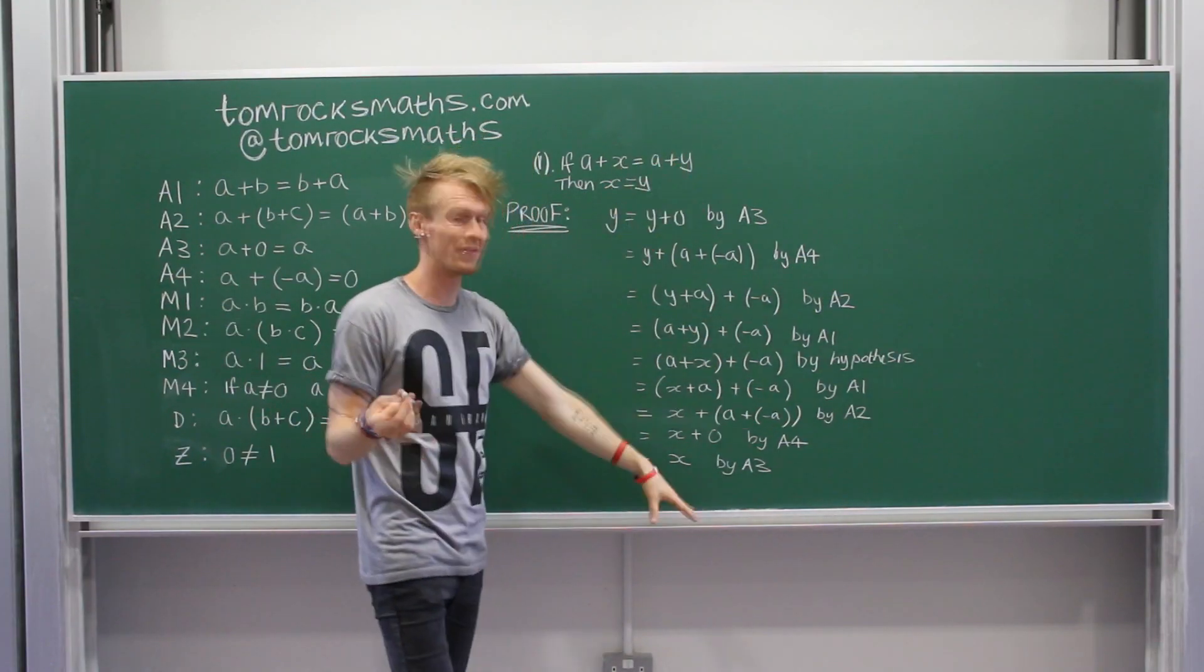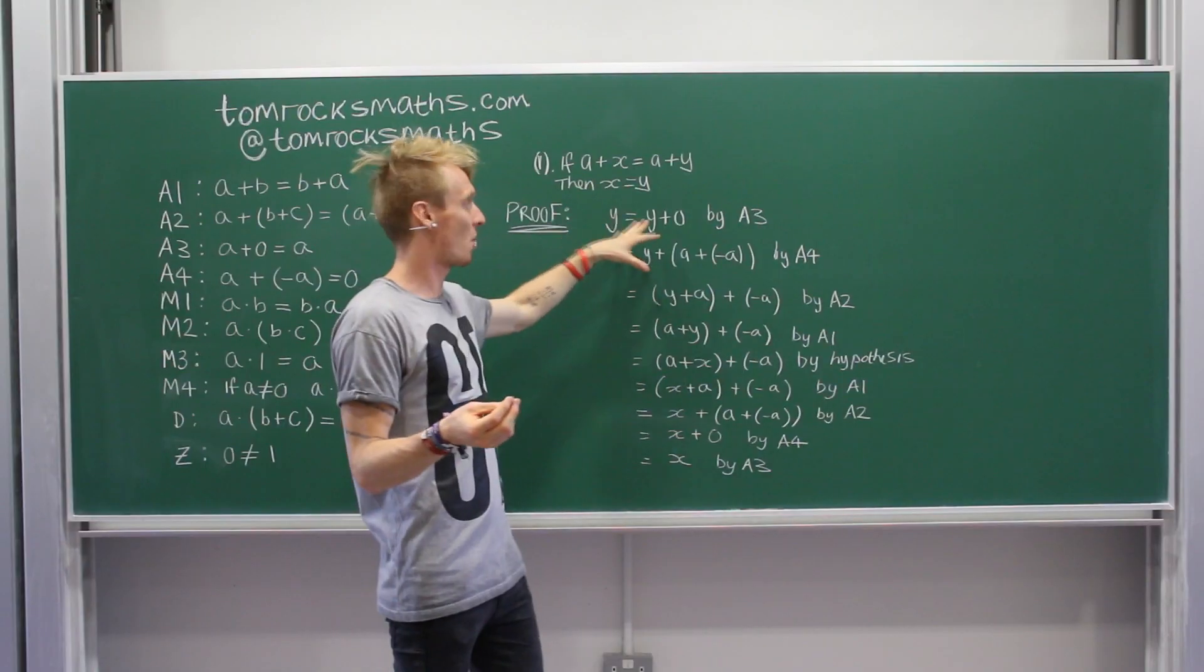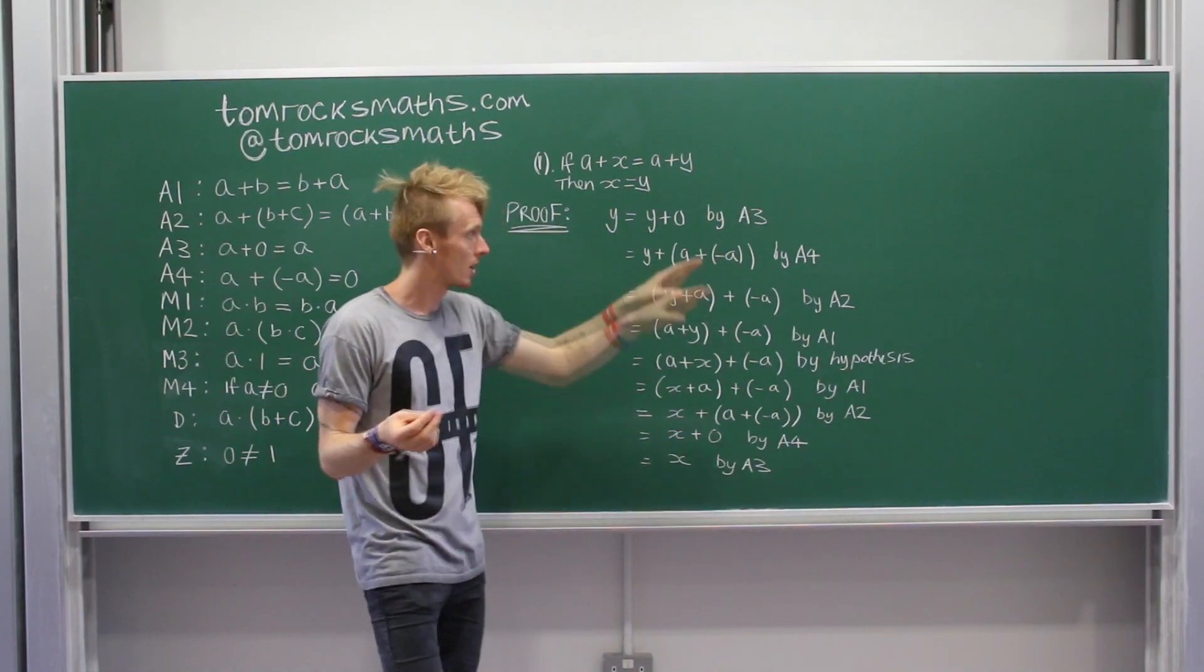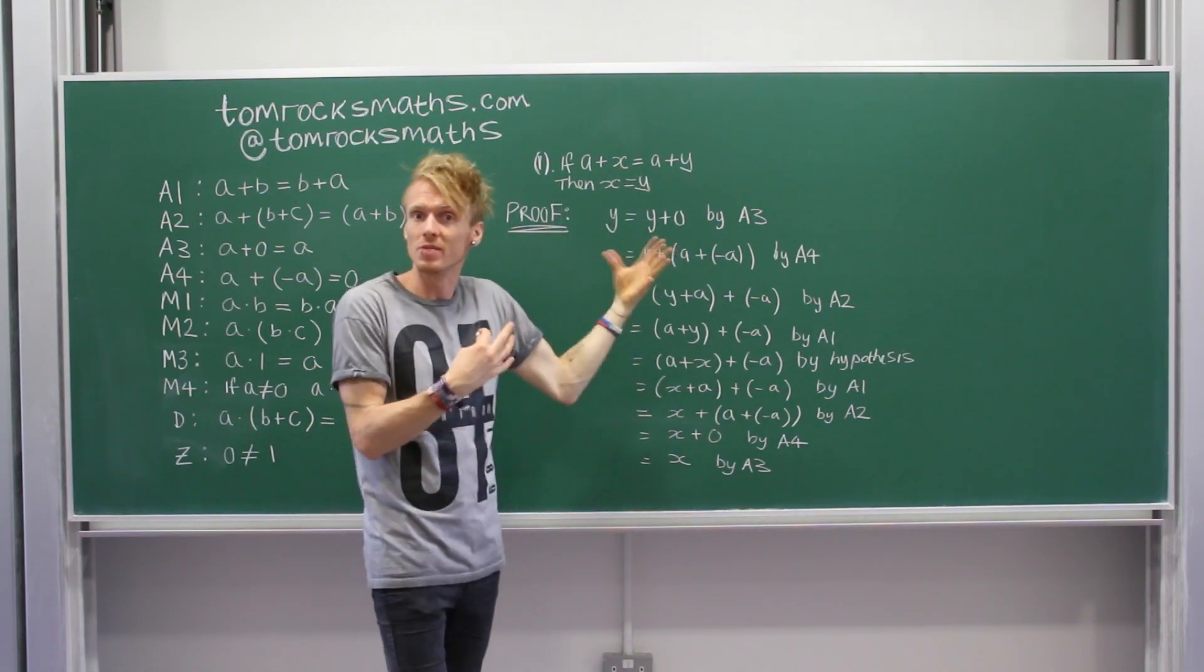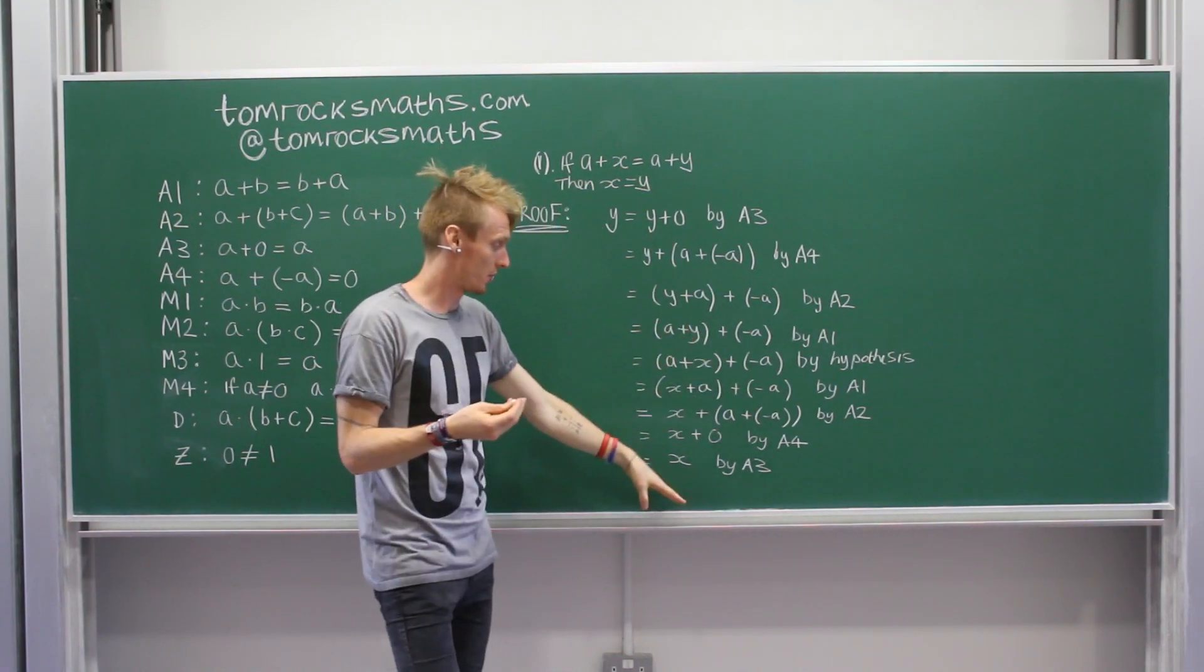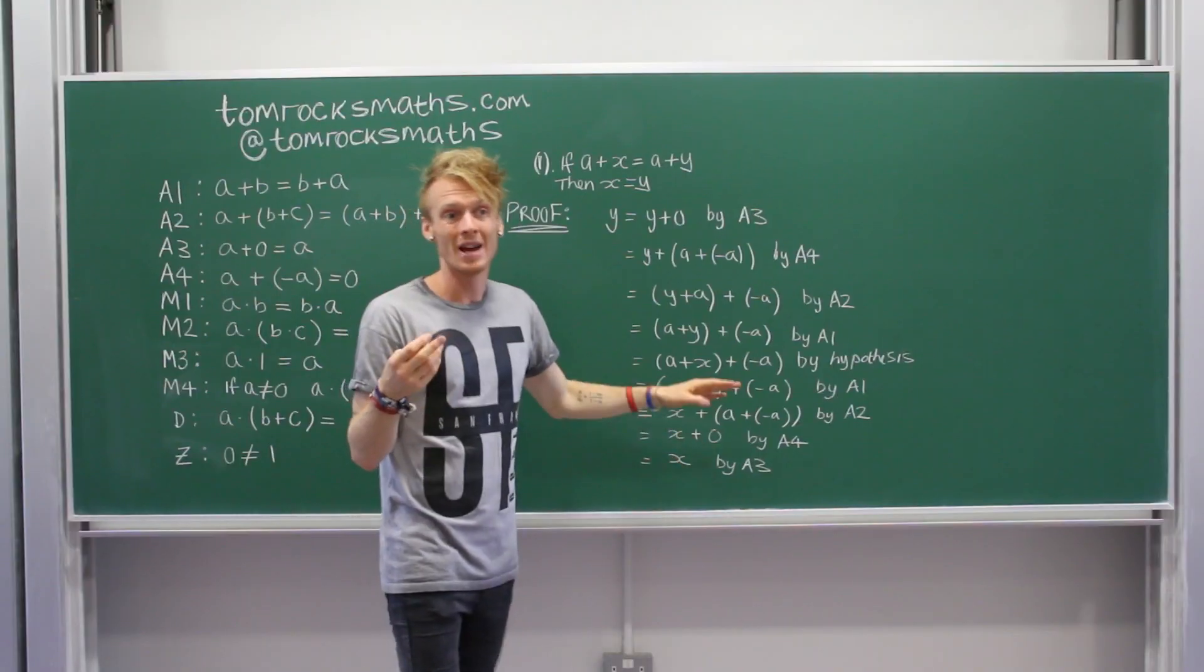So we've gone through a total of 9 steps, starting with y, using our axioms, 3, 4, 2, 1. Then we use our hypothesis, so the statement that we were allowed to assume at the beginning. And then another 4 axioms, and we get to x.